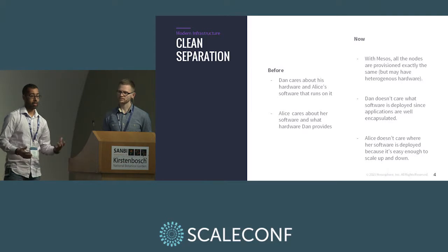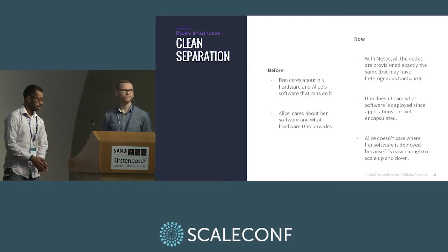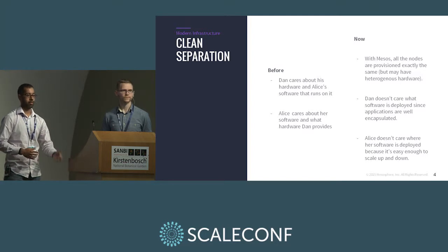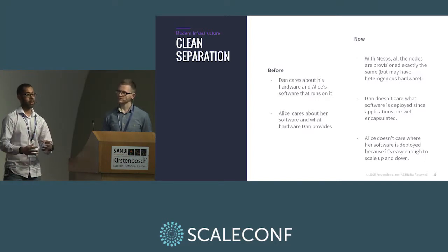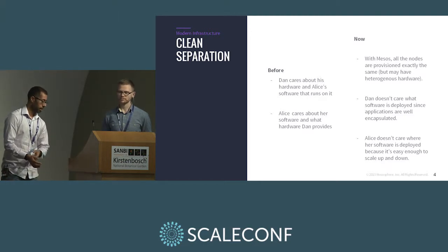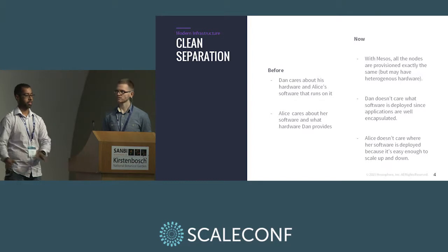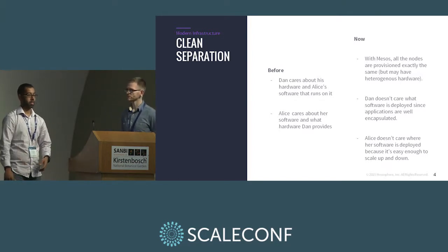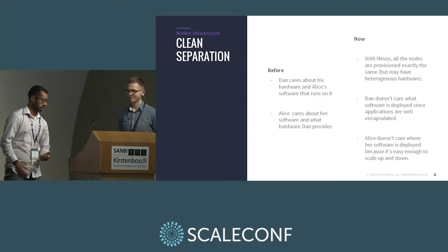What do we mean by clean separation? Right now, if you install a web server somewhere, Alice has to tell Dan how to configure it — this config file should be here, these are the dependencies, it has to be this version of Linux, this version of PHP. That's painful. Every time a server goes down, Dan has to recreate that node from scratch. In this new world, using Mesos and containers, the goal is to ship your dependencies with your application. Alice says, here's my Dockerfile — the image specifying my application plus everything needed to run it. Dan just runs that Dockerfile and doesn't have to worry. Dan can swap out the base OS as long as it provides the same clean interface and can run Docker images. Everything just keeps running.